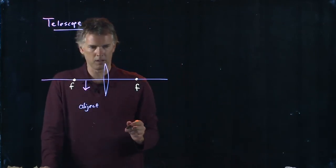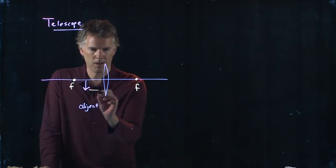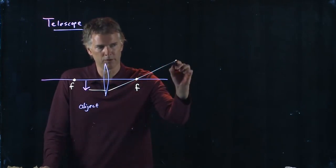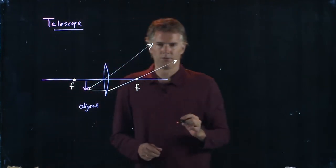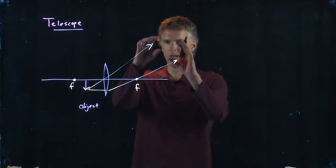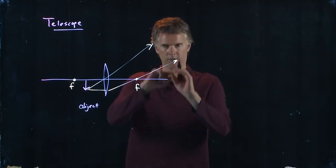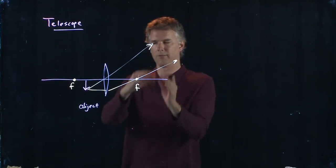We just did this one a second ago, but let's redo it. Parallel rays go through the focus. Rays through the center don't bend. The image clearly can't be located over here, right? These rays never meet.